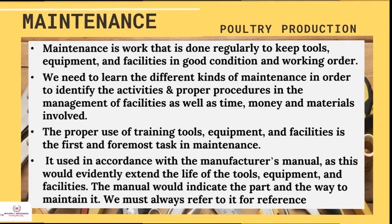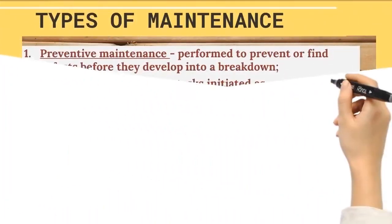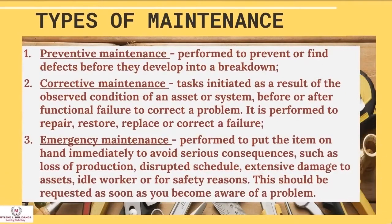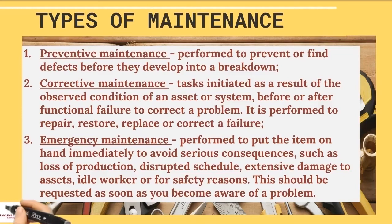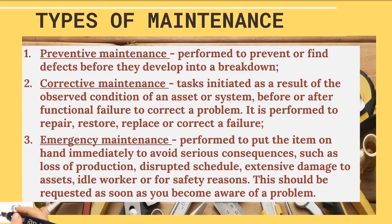Types of maintenance. Number one — preventive maintenance: performed to prevent or find defects before they develop into a breakdown. Number two — corrective maintenance: initiated as a result of an observed condition of an asset or system, performed to repair, restore, replace, or correct a failure. Number three — emergency maintenance: performed to put an item back in service immediately to avoid serious consequences such as loss of production, disrupted schedules, extensive damage, idle workers, or safety reasons. This should be requested as soon as a problem is identified.